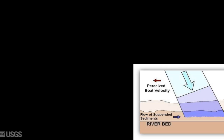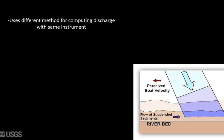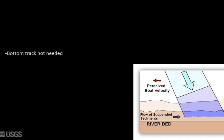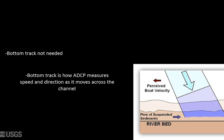These factors are why use of the midsection method provides great advantages for a check measurement. First, you are simply using a completely different method for computing discharge, which doesn't rely on bottom tracking. Remember that bottom tracking is how the ADCP measures its speed and direction as it moves across the channel. With midsection, the ADCP is assumed to be stationary, so bottom tracking isn't necessary.